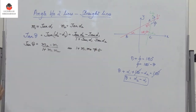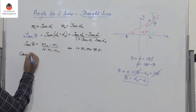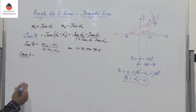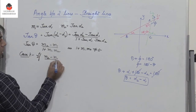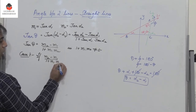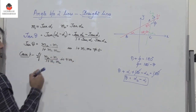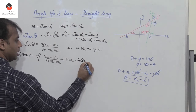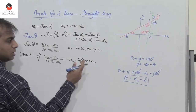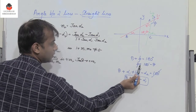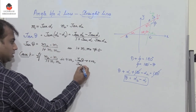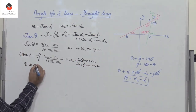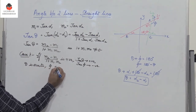We require that 1 plus m1 times m2 is not equal to zero. There are two cases. Case 1: if the expression (m2 minus m1) divided by (1 plus m1 m2) is positive, then tan(theta) is positive and tan(phi) would be negative, meaning theta is acute whereas phi is obtuse.